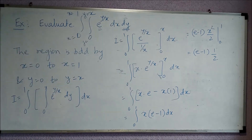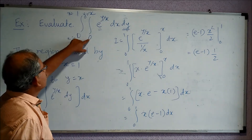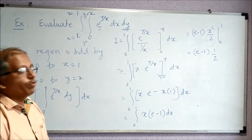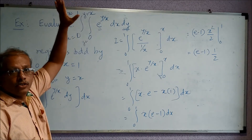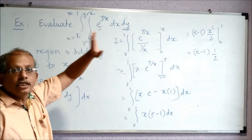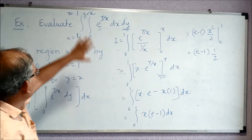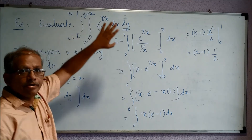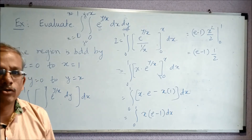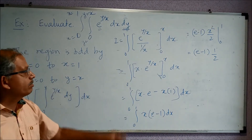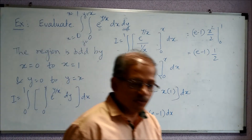Just go through these steps. The basic part is to understand the meaning of these limits. Whenever the limits involve some kind of x, the integration is with respect to y. And vice versa: if y is involved in the integration limit, the integration is with respect to x. Please try to understand this, and then we can easily solve further examples. Thank you.